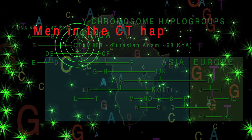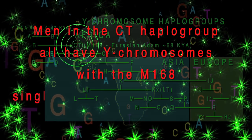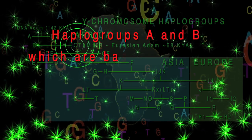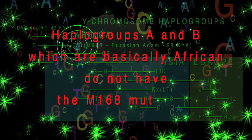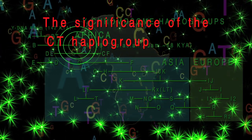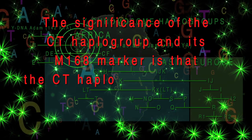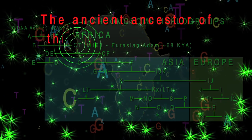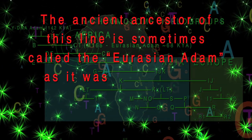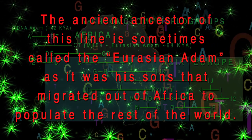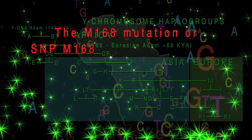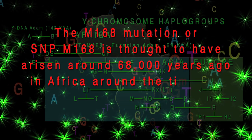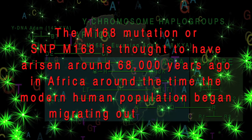Men in the CT haplogroup all have Y chromosomes with the M168 single nucleotide polymorphism or mutation. Haplogroups A and B, which are basically African, do not have the M168 mutation. The significance of the CT haplogroup and its M168 marker is that the CT haplogroup gave rise to all male lines outside of Africa. The ancient ancestor of this line is sometimes called Eurasian Adam, as it was his sons that migrated out of Africa. The M168 mutation is thought to have arisen around 68,000 years ago in Africa, around the time the modern human population began migrating out of Africa.